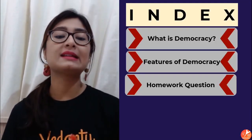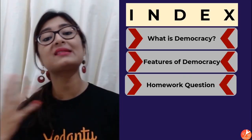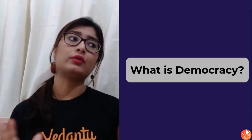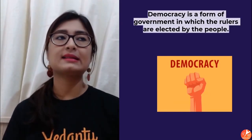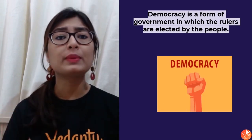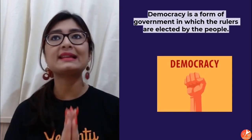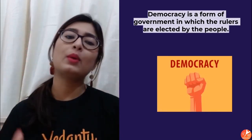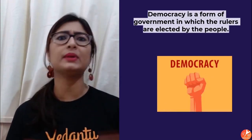Today we're going to talk about what is democracy and discuss the features of democracy — those characteristics which make a democracy a democracy. First of all, what is democracy? As Abraham Lincoln said, democracy is a government which is of the people, by the people, for the people — centered around the citizens. In simple form, democracy is a form of government in which rulers are elected by people.